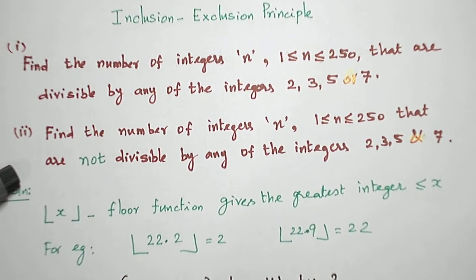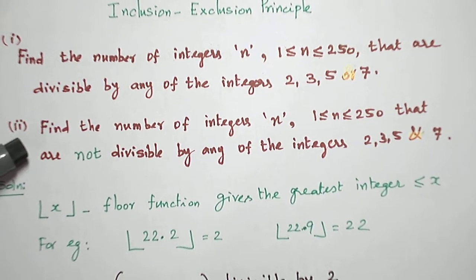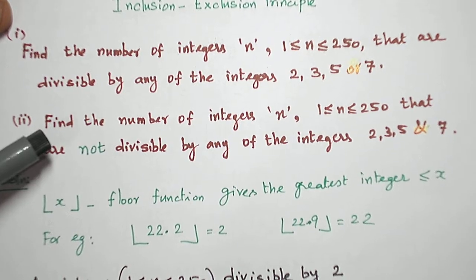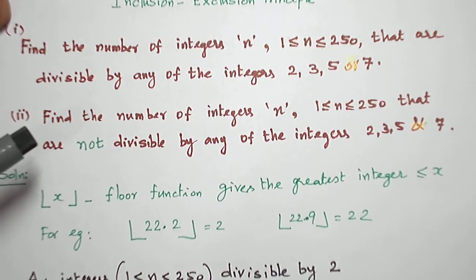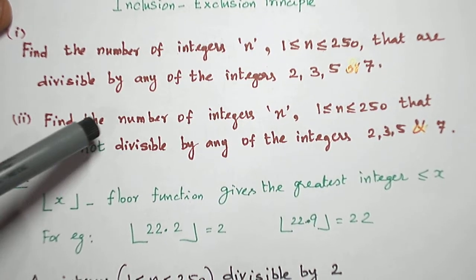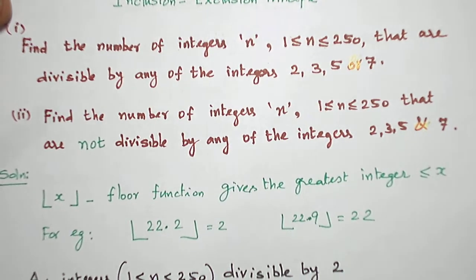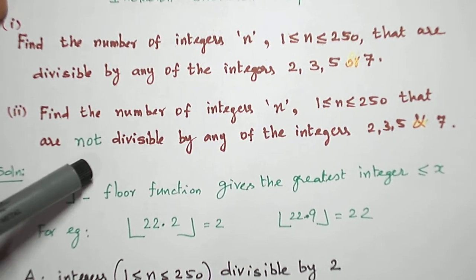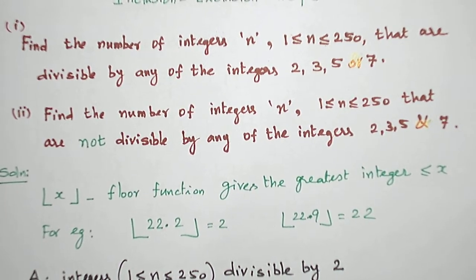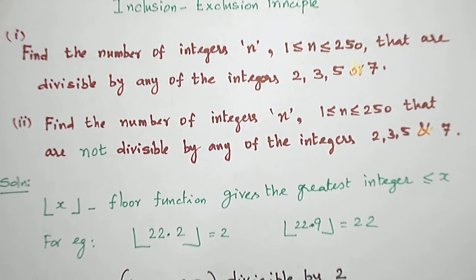The same thing can be given in this way also, with almost the same procedure but with a deviation at the end. Find the number of integers between 1 and 250 that are not divisible by any of the integers 2, 3, 5, and 7.